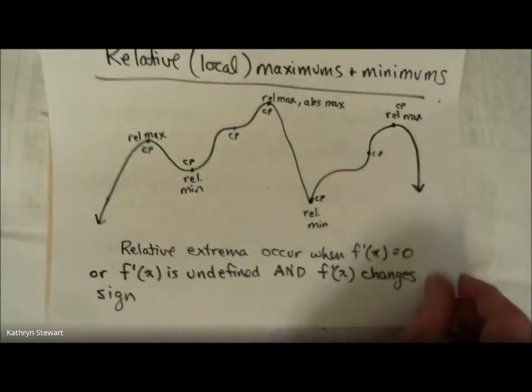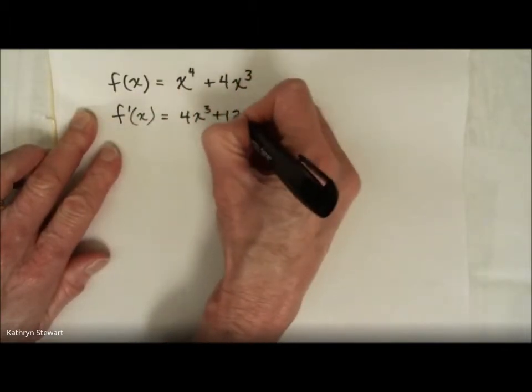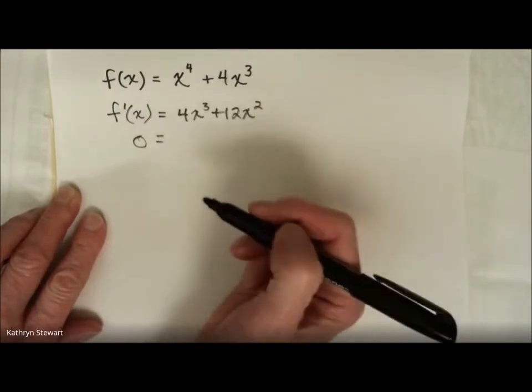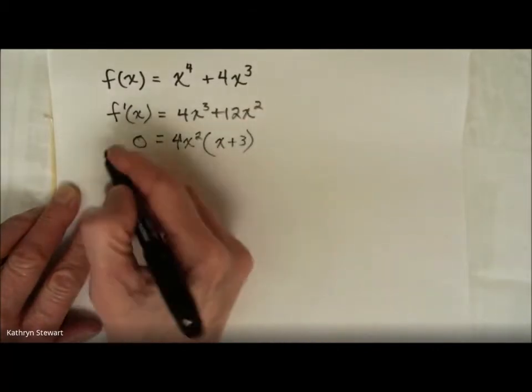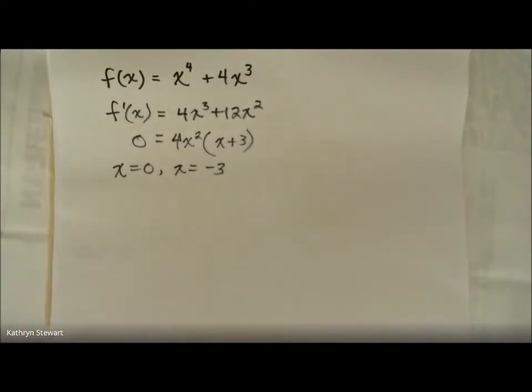Let's do a couple of examples. Here's a nice quartic polynomial — let's find any relative maximums and minimums. Relative maximums and minimums happen at critical points, so let's find critical points by finding where the derivative equals zero or where it's undefined. The derivative of polynomials is always defined, so I'll just take the derivative and set it equal to zero. Factoring out a GCF gives critical points at x equals 0 and x equals negative 3.